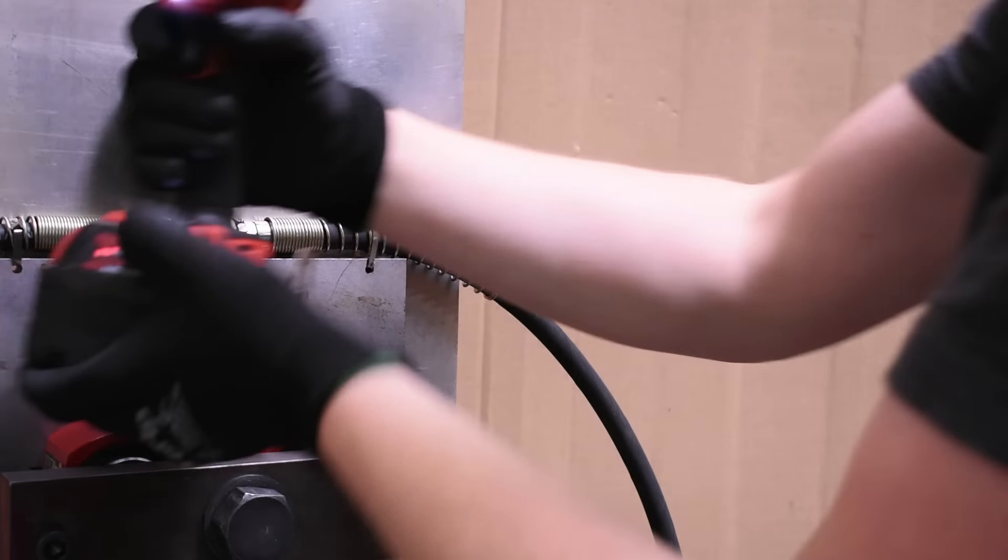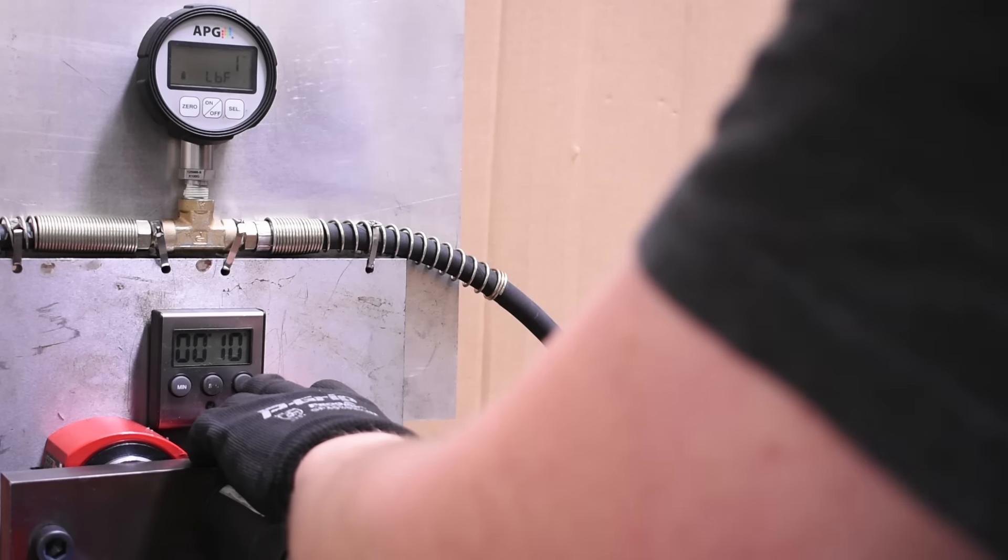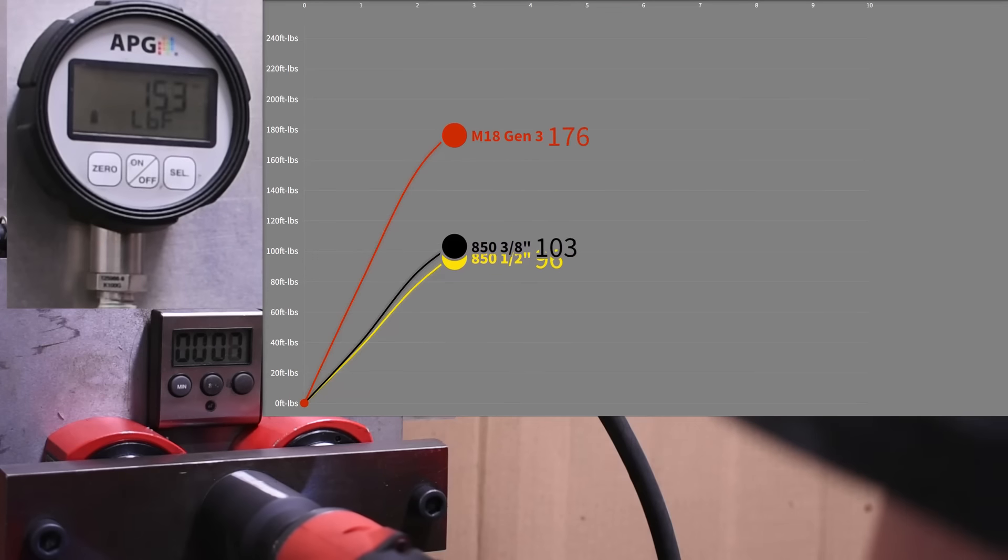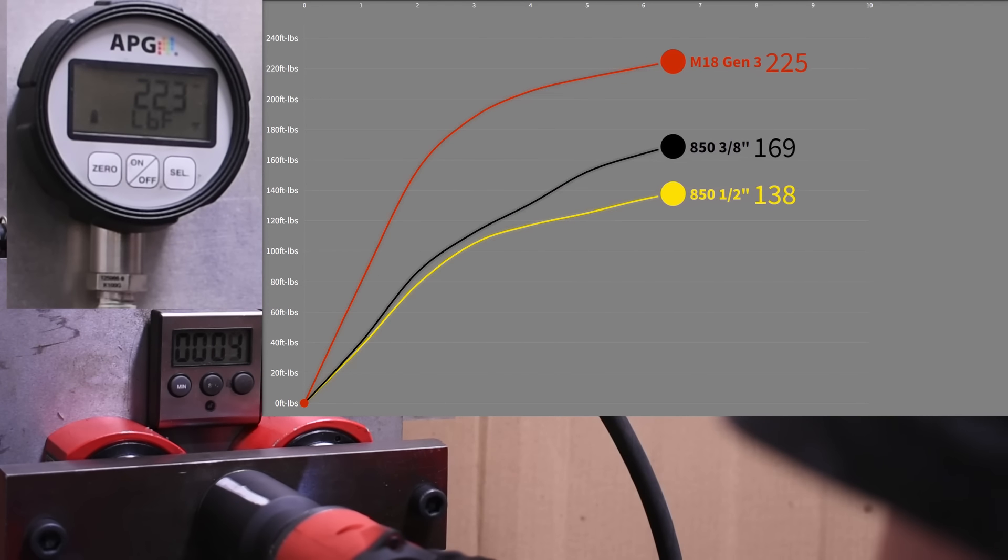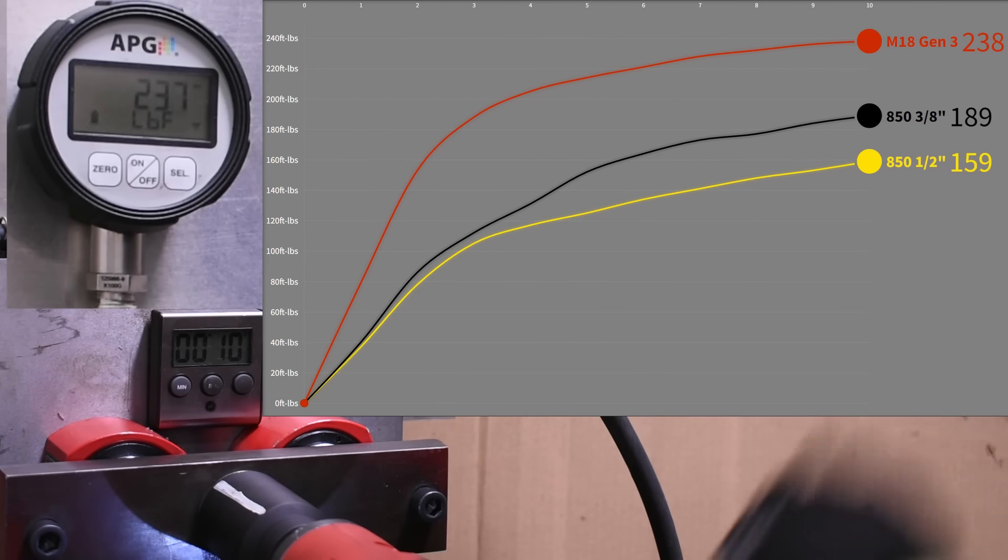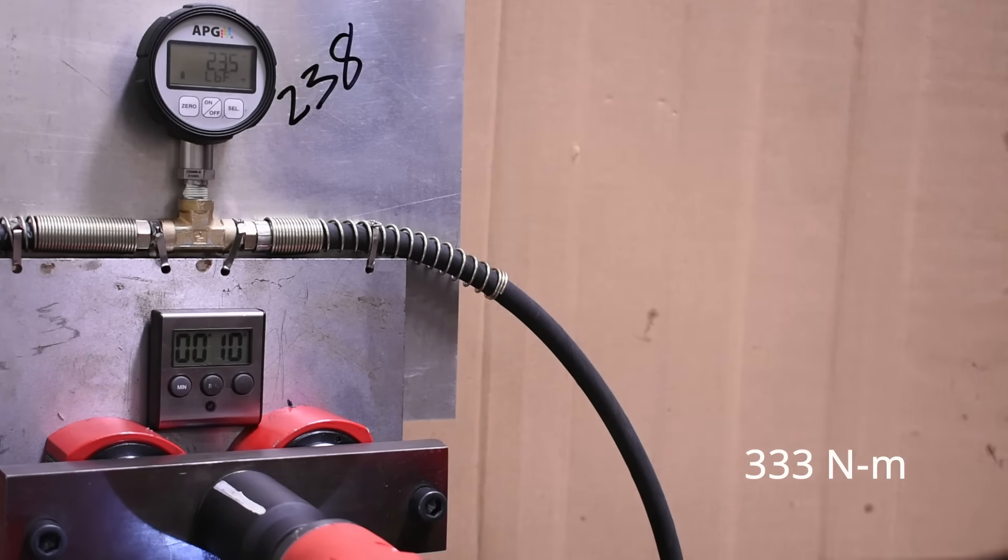Here's the Milwaukee Gen 3 Frankenstein. 238 foot pounds. That thing comes out the gate quick, widening the gap on the DeWalt brothers below it.